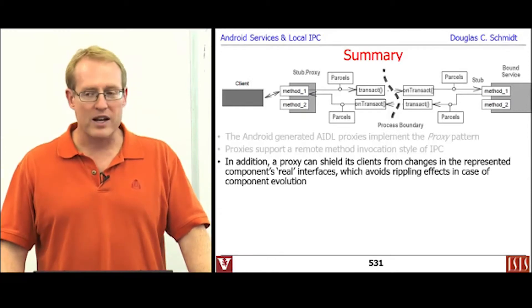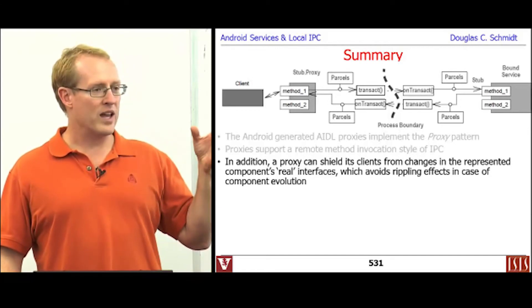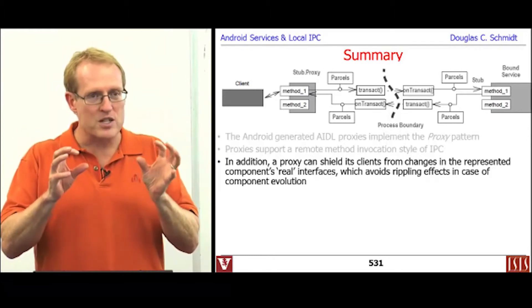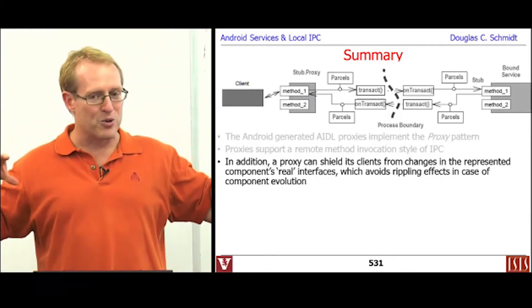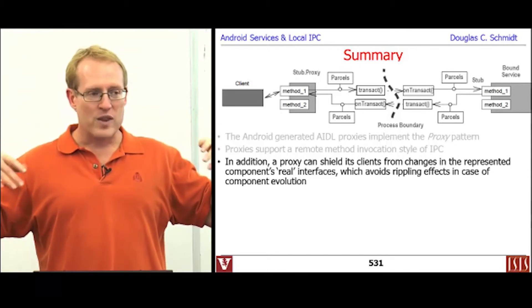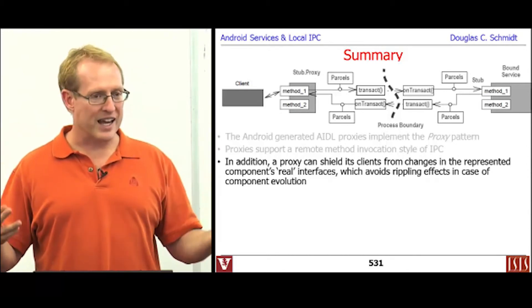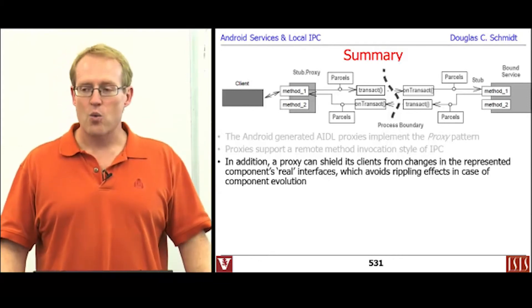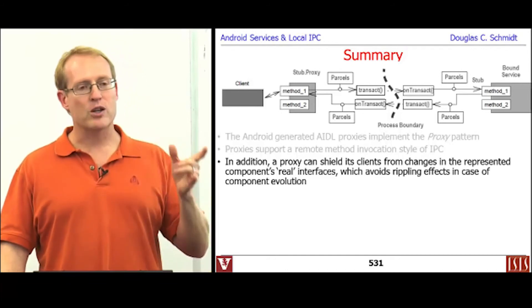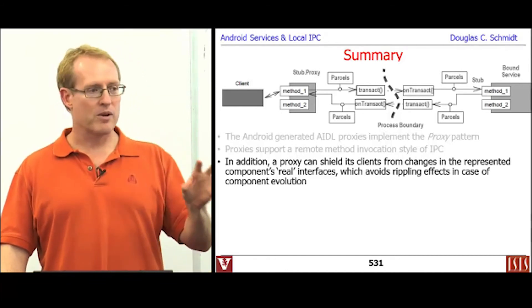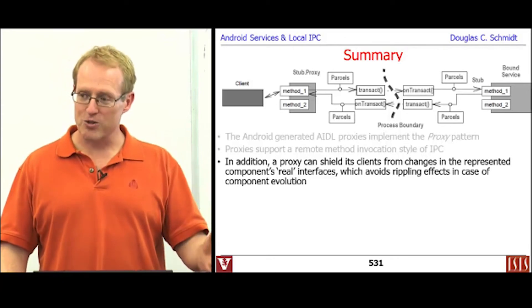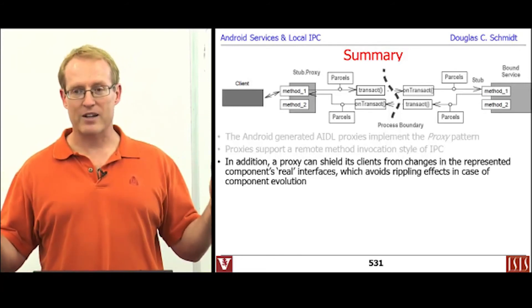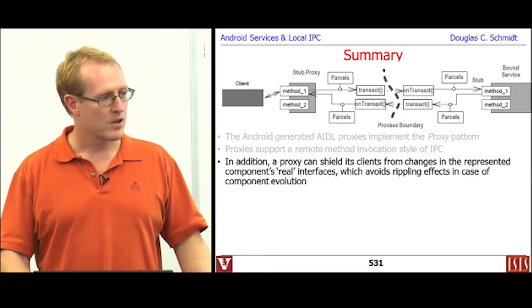Another benefit you get with proxies is that you can make changes in the way you've configured and deployed your system — how you partition it into pieces and distribute them across processes — without really changing the way things are designed and implemented. So you're deferring until deployment time where things reside, as opposed to prematurely committing yourself to one deployment over another. That's another potential great flexibility if you want to build systems that can be auto-scaled without making radical changes to the underlying implementation.